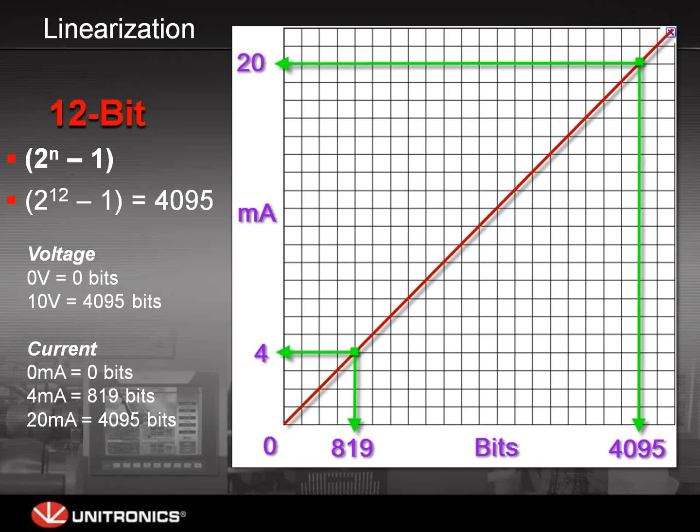The value that comes into the controller will be in bit values. If we have zero volts on our sensor, the operand assigned in VisiLogic will also have zero in it. Zero equals zero bits. If you have 12-bit linearization and 10 volts on the sensor, inside the register in VisiLogic it will display 4,095 bits.